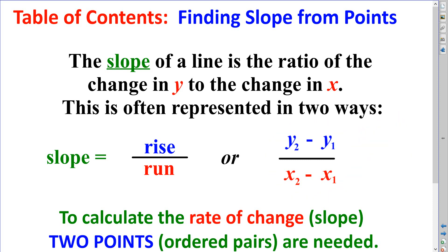To calculate the rate of change, or the slope of a line, or an equation, or a graph, or a table, you need at least two pairs of points.